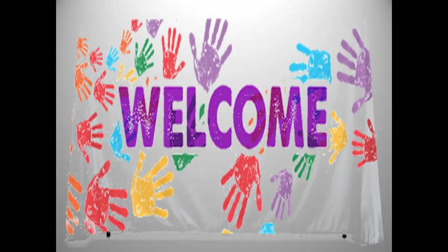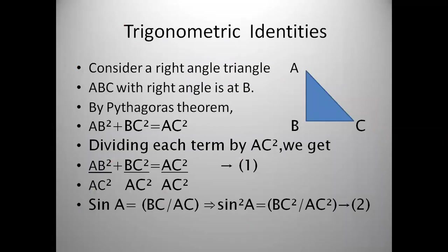So, trigonometric identities. Consider a right triangle which is right-angled at B. Angle A and angle C are acute angles. By Pythagoras theorem, we get AB² plus BC² is equal to AC². Now divide each term of the above equation by AC². We will get AB²/AC² plus BC²/AC² is equal to AC²/AC².